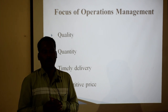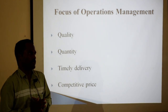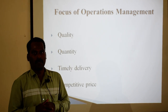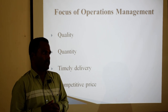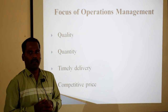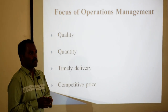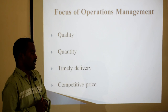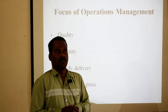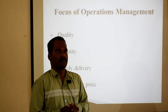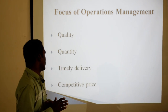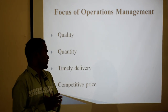Then, quantity — how much of our product is demanded in the market, or how much we agree to give to our customers. For example, if we agreed to give a customer 500 units of product, we have to deliver those 500 units. The operations manager should keep quantity in mind. Then, timely delivery — the time duration which we promise to our customers. When the customer needs the product — say 3 months or 6 months — we have to deliver the consignment within that time period.